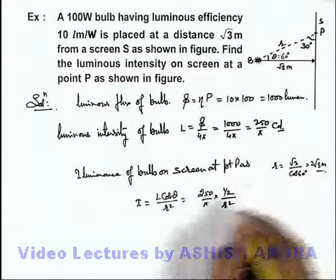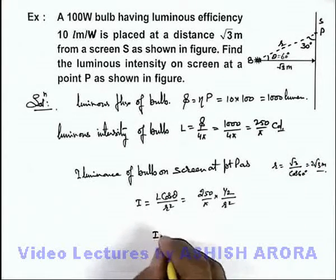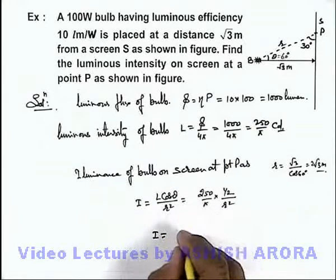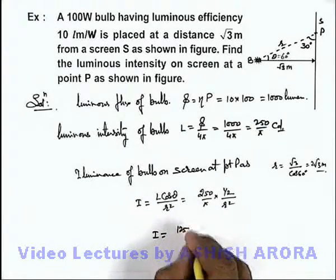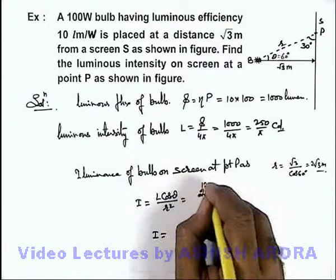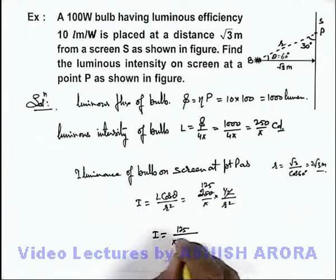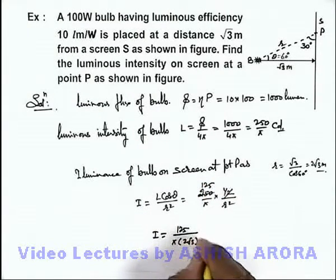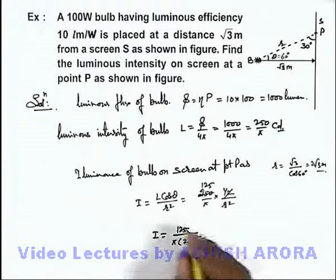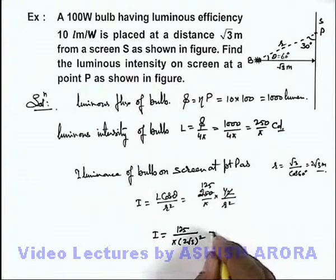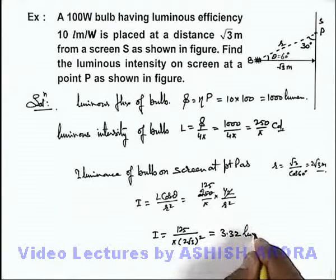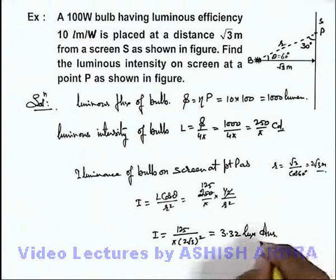So if we use this value over here, illuminance on screen at point P we can write as 125 by π multiplied by 2√3 whole squared. If we simplify the values here, this will give us 3.32 lux. That will be the answer of this problem.